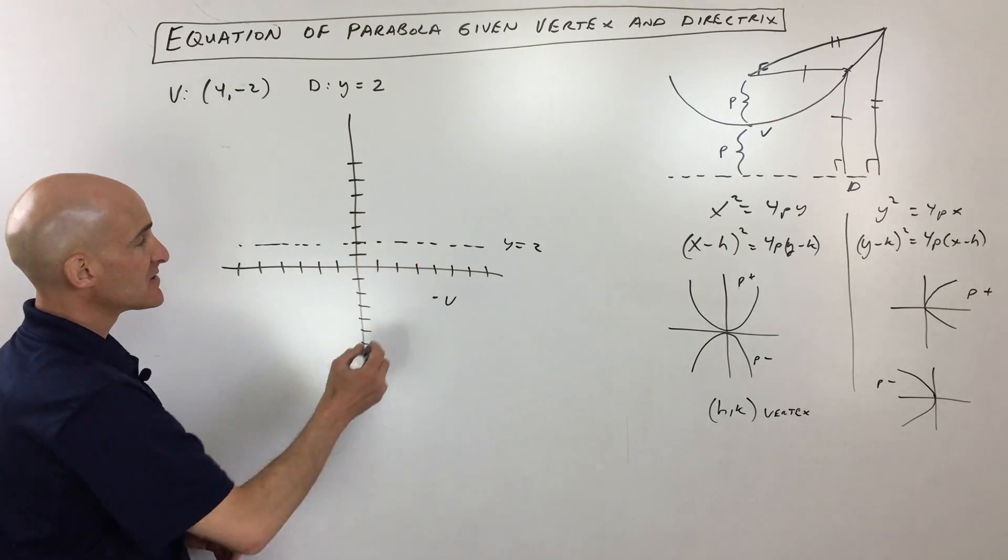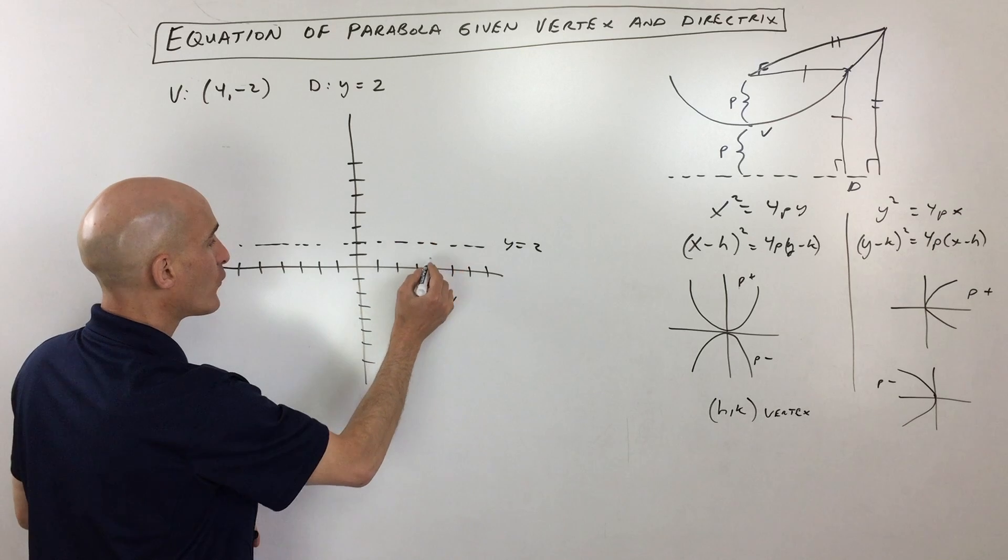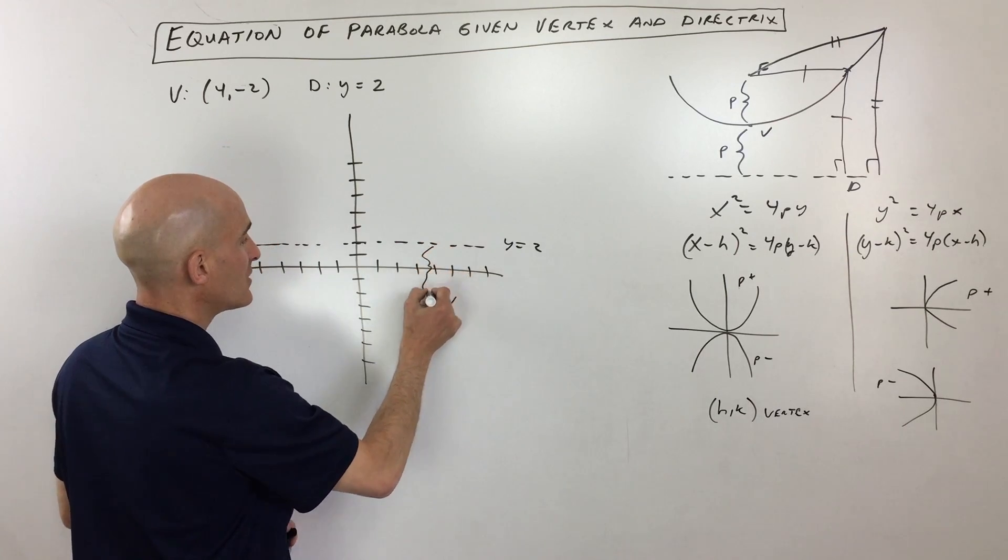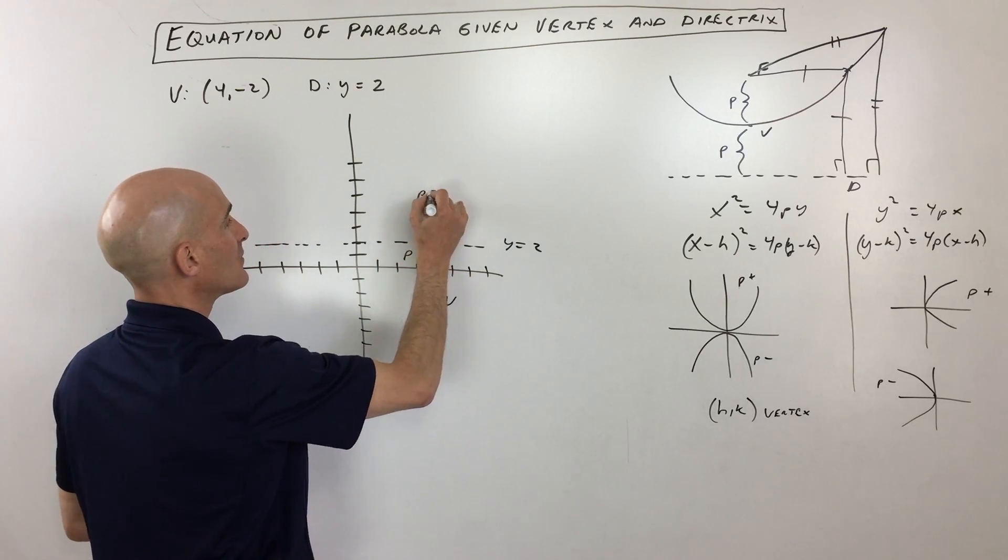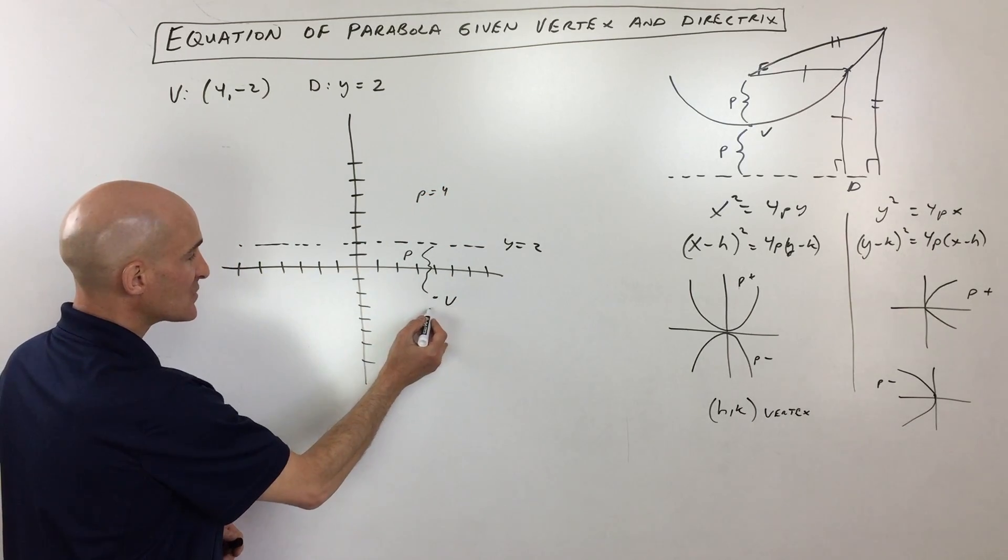What we want to do is we want to realize that the distance from the vertex to the directrix is our p value. So you can see here, this is going 1, 2, 3, 4. So from here to here, that's p, p is equal to 4. Also, if you go from the vertex to the focus, that distance is 4.